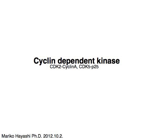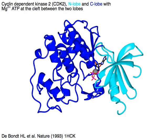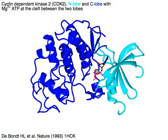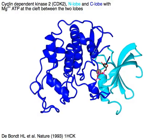Cyclin-dependent kinase: activation of CDK2 by cyclin E, and activation of CDK5 by P25.